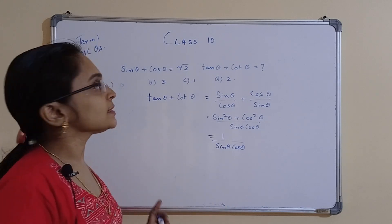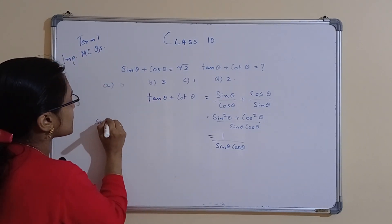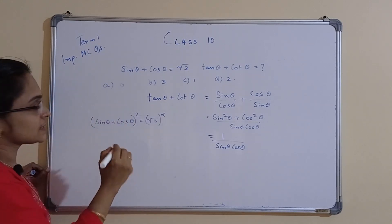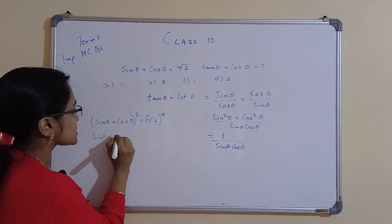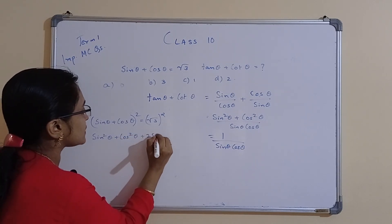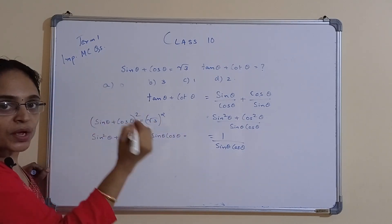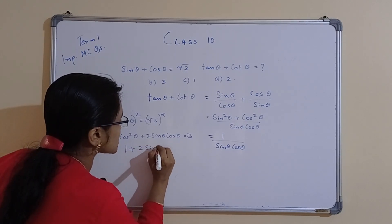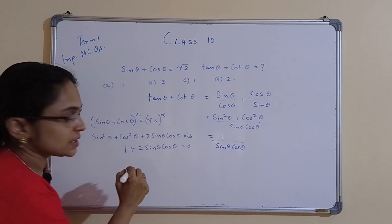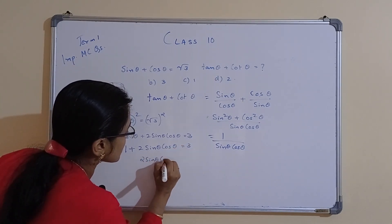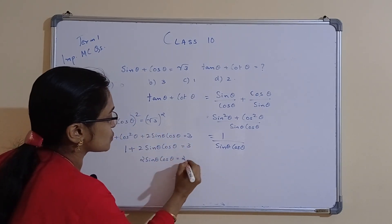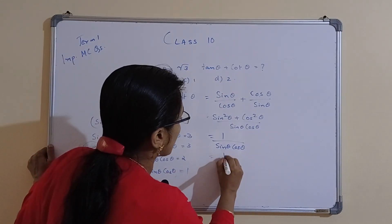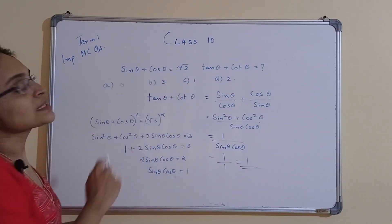Now we find sinθ cosθ. We are given sinθ + cosθ = √3. Squaring both sides: sin²θ + cos²θ + 2 sinθ cosθ = 3, so 1 + 2 sinθ cosθ = 3, giving sinθ cosθ = 1. Therefore tanθ + cotθ = 1/1 = 1. Option C is correct.